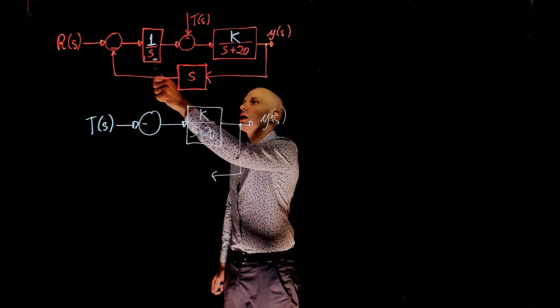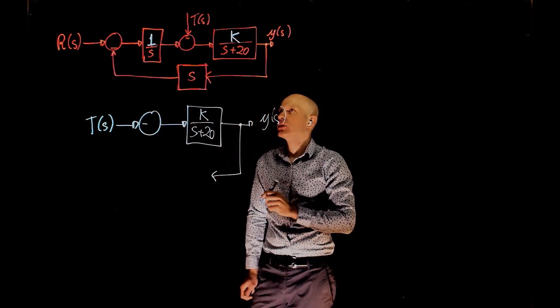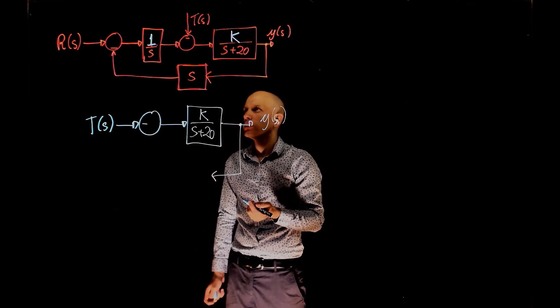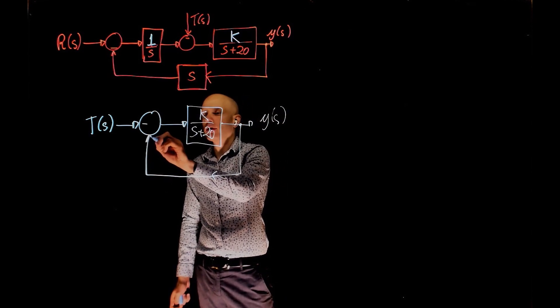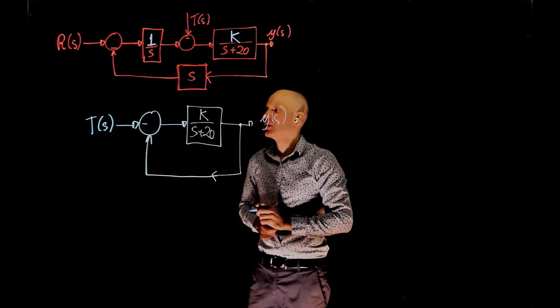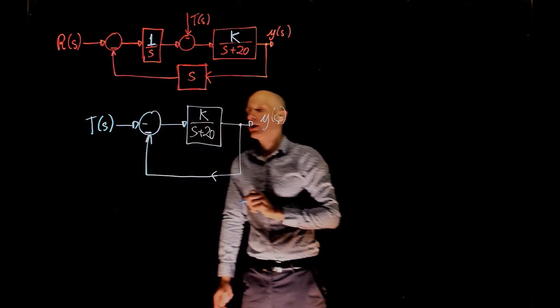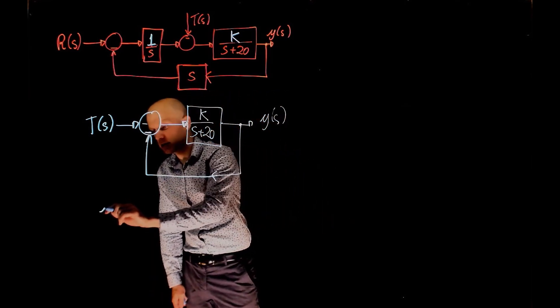So when you multiply them, that becomes 1. So this feedback function here is a unit feedback function, s times 1 over s. Let's not forget that negative sign there that comes back here. Now the closed loop transfer function for this expression.